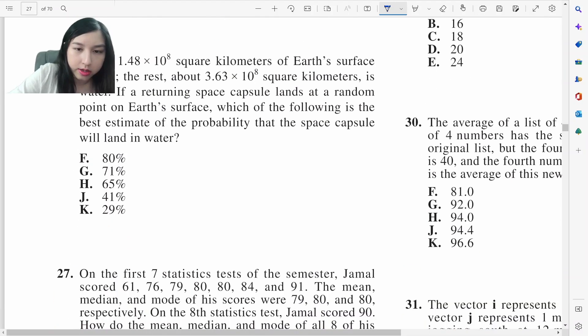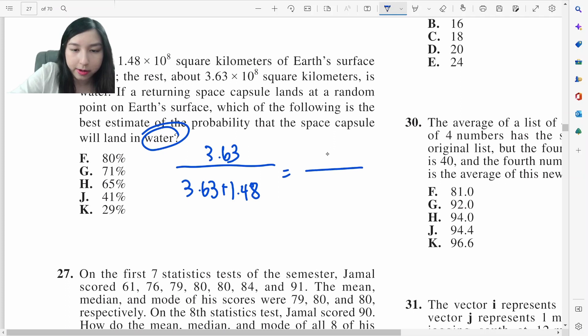This is land, this is water. Probability will land in water. Water is 3.63 out of everything. 3.63 plus 1.148. This would be about 3.5. 3.63 is about 3.5 plus 1.5 is about 5. 7 over 10. 70 percent. G.